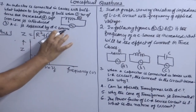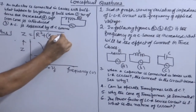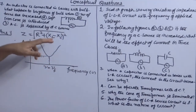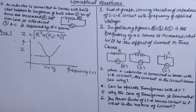At resonant frequency, XL minus XC whole square becomes zero because XL is equal to XC, so the circuit becomes purely resistive. This is the answer for question number one.